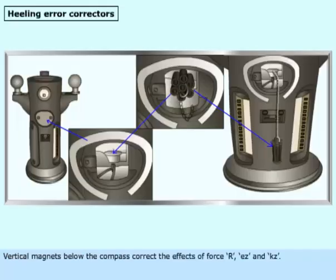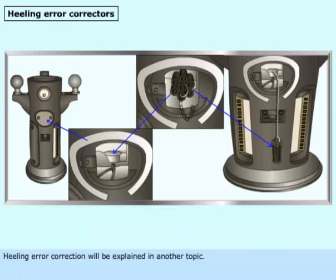Healing error correctors: Vertical magnets below the compass correct the effects of force R, EZ, and KZ. Healing error correction will be explained in another topic.